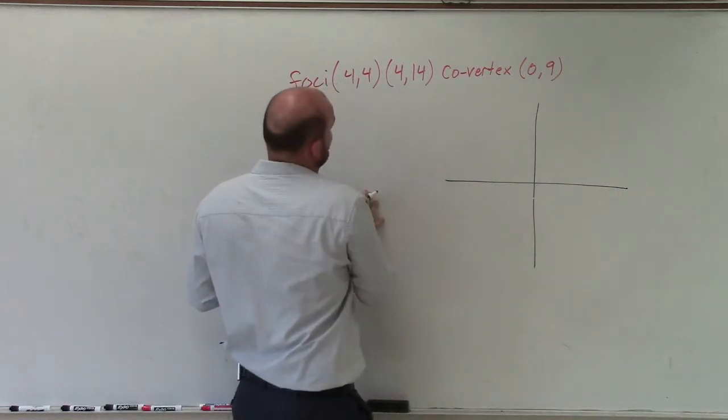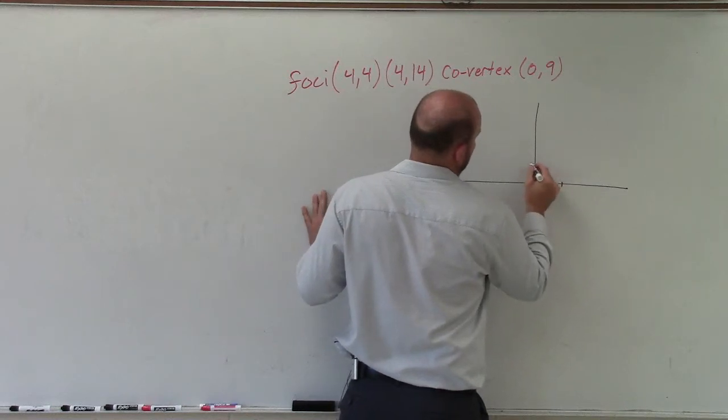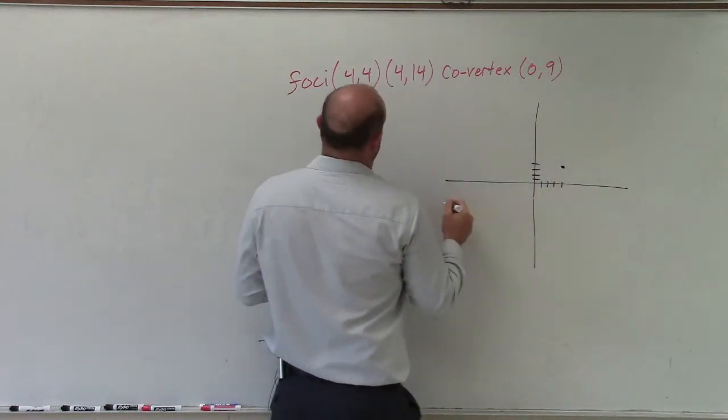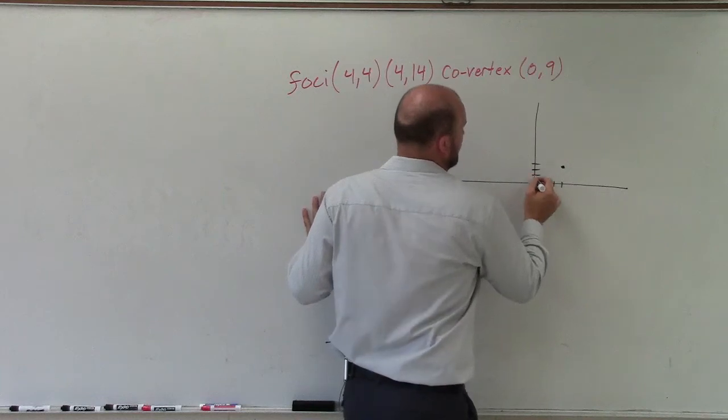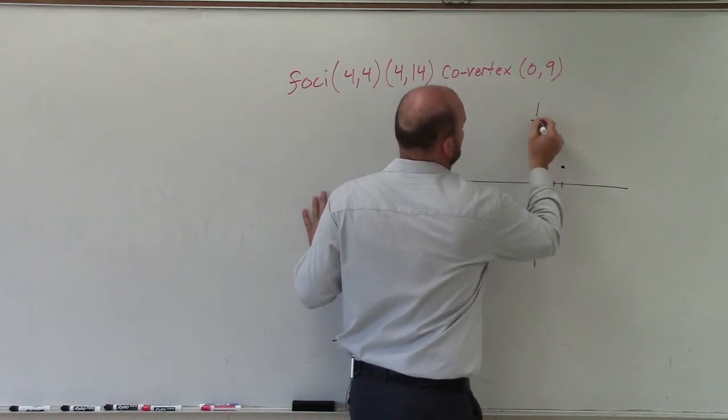So the foci, which is at (4,4) and (4,14). So 1, 2, 3, 4, and then 1, 2, 3, 4. And then at 4, 14, 4, 5, 6, 7, 8, 9, 10, 11, 12, 13, 14.